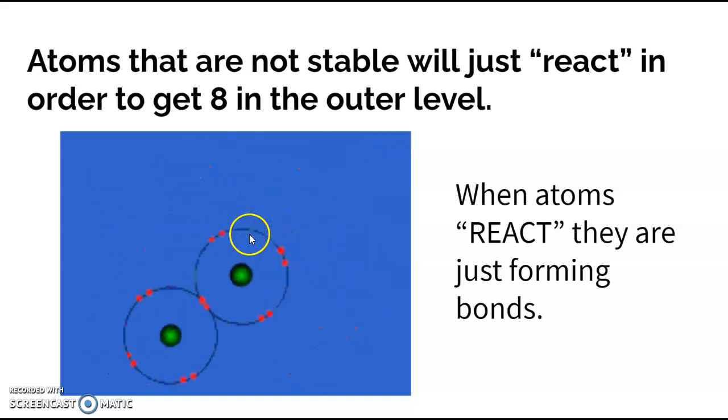Any atom that's not having eight valence electrons is going to react to try to get eight in the outermost level. When we say react, sometimes we think of things exploding or bubbling or changing color, but really what's happening when things react is that atoms are just forming bonds and attaching to different other atoms.